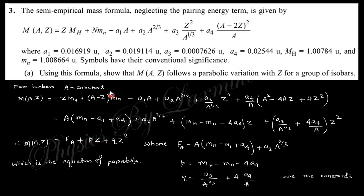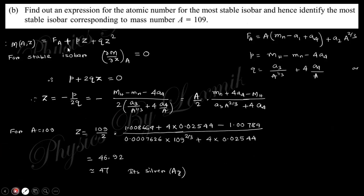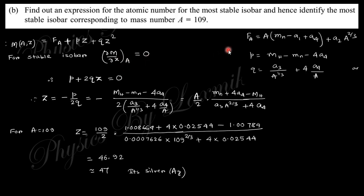The next part asks: find an expression for the atomic number Z of the most stable isobar, then identify the most stable isobar for mass number A = 109. We express the mass as: M = constant + P·Z + Q·Z². For the most stable isobar, we set ∂M/∂Z at constant A equal to zero. Taking the derivative gives Z = −P / (2Q).